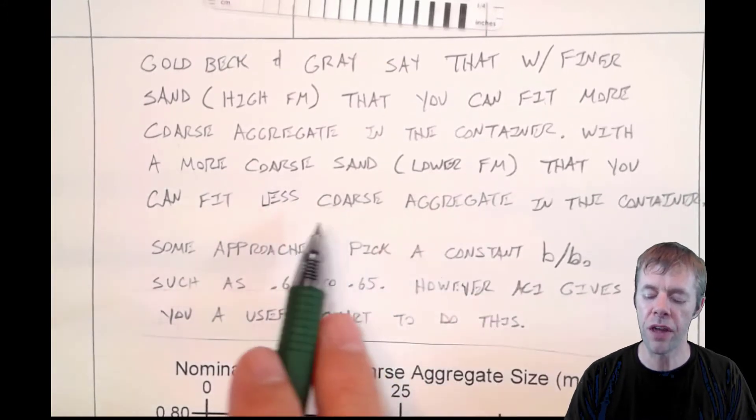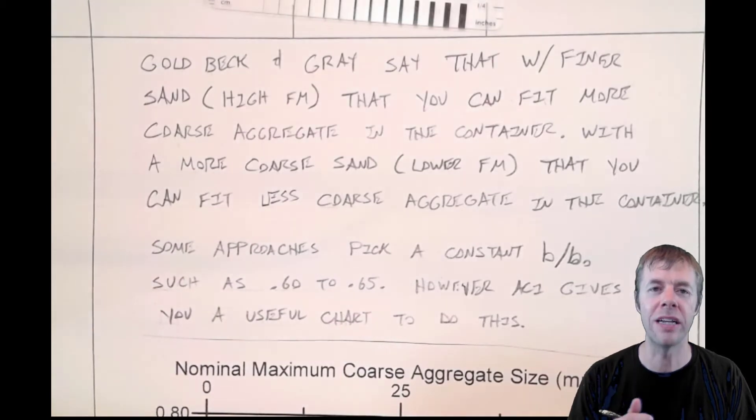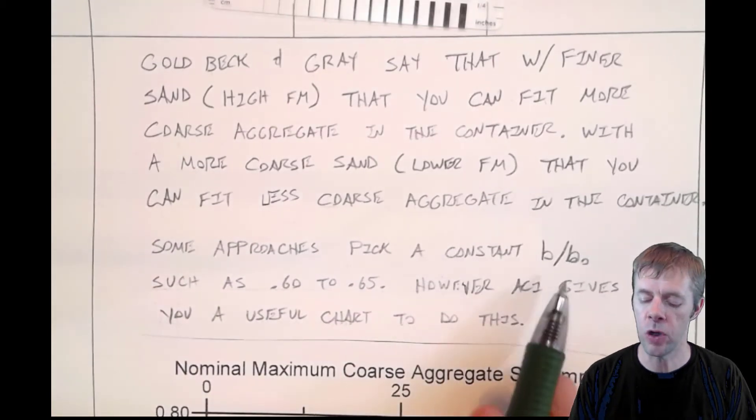So this is what they found, and they quantified it with this concept called B over B naught. Some people don't like this whole approach and just pick a number like 0.60 or 0.65.